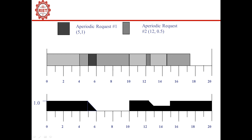At time instant 10, both task B and task A are in the queue, since task A's period is 10. We preempt task B and start executing task A from 10 to 12 without issue. At time instant 12, a second aperiodic request arrives with high priority, because the server's period is 5, making it shorter than task A's period of 10. Since the server still has capacity 1, we preempt task A and begin execution of the second aperiodic request.